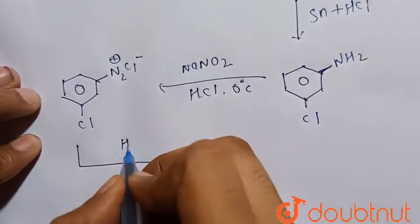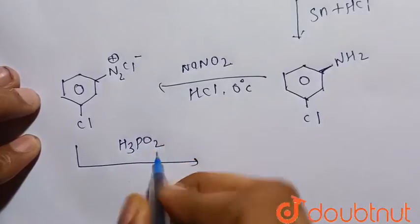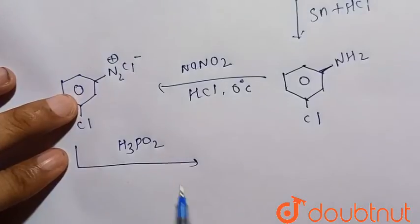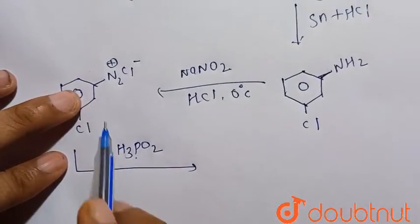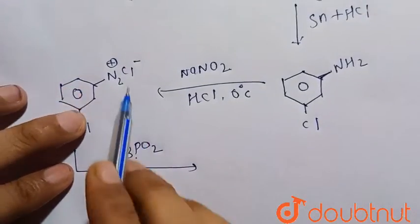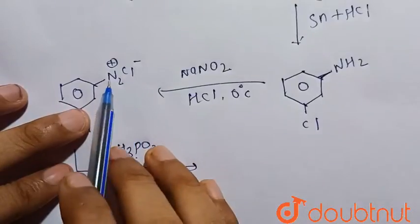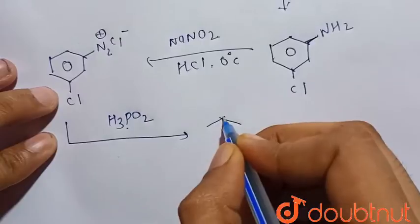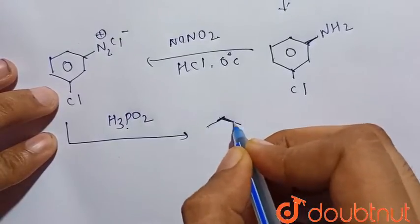Now it is treated with H3PO2. We know that H3PO2 changes diazonium salt into benzene, so this N2+ Cl- group will eliminate. So there is only remaining chlorobenzene.